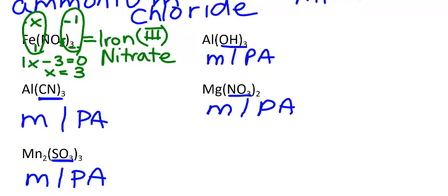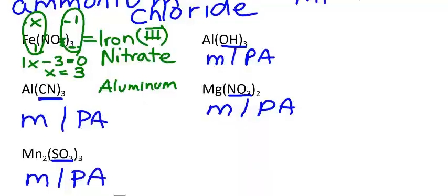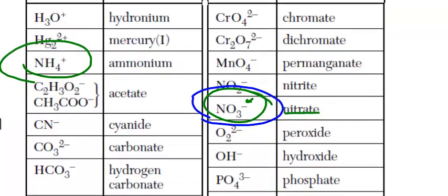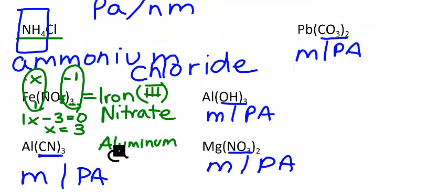Let's try another one — metal polyatomic. We name our metal. You can look up names in Table S and SAM. Going to the box for aluminum, there's only one possible charge. When there's only one charge, we don't use parentheses and a Roman numeral — we just name the polyatomic. From Table E, CN is called cyanide. So this is aluminum cyanide.